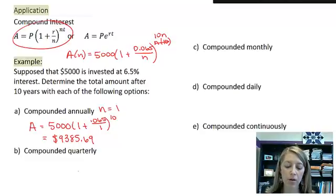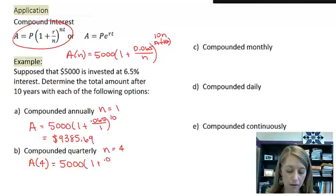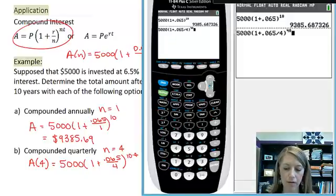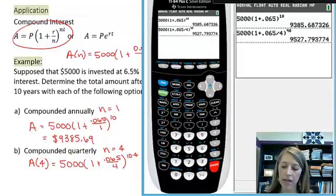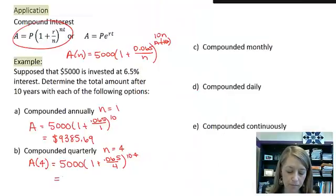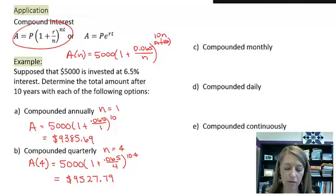What happens if we're going to compound it quarterly? If we compound it quarterly, that means we are compounding it 4 times a year, so our n value is 4. You can see I have this typed in my calculator, and when I get this out, I get $9,527.79. So we can see if I go from annually to quarterly, I earn a couple of hundred dollars extra.